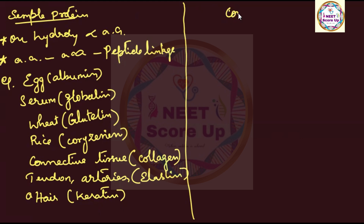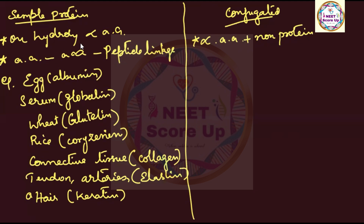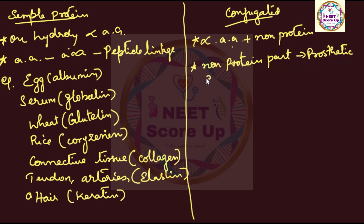The next type is conjugated protein. Conjugated protein: on hydrolysis it gives alpha amino acids, but it also has a non-protein part. If there is a non-protein part attached, that is conjugated protein. The non-protein part is called the prosthetic group.